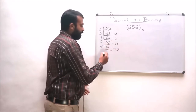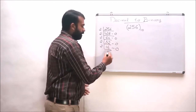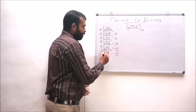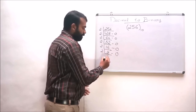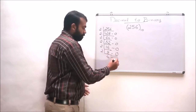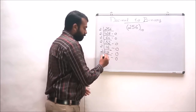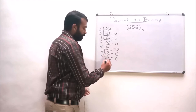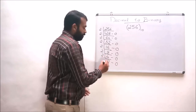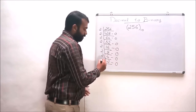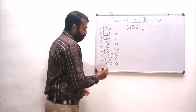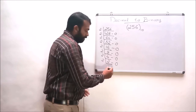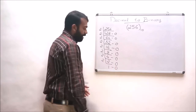Dividing 16 by 2 gives 8 with a remainder of 0. Dividing 8 by 2 gives 4 with a remainder of 0. Dividing 4 by 2 gives 2 with a remainder of 0. And finally, dividing 2 by 2 gives 1 with a remainder of 0.